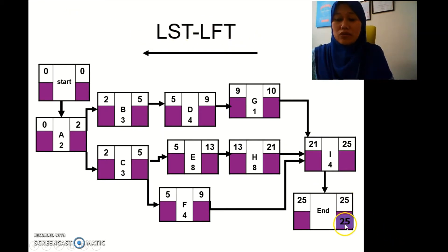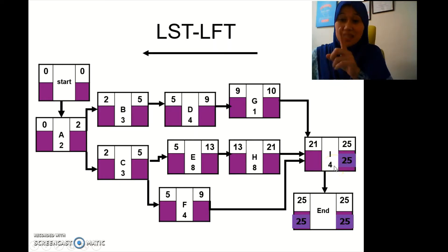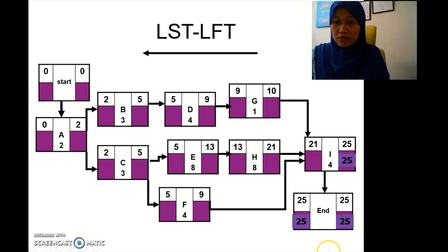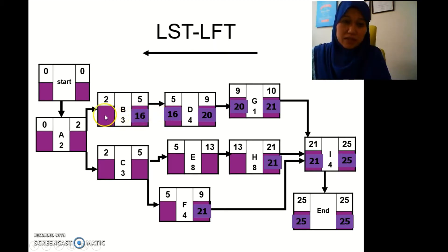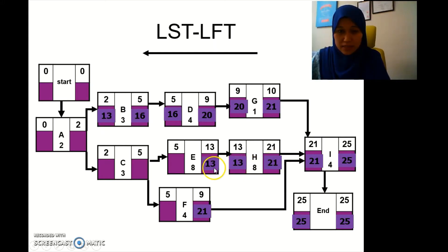We start from the end going backward. At the end box: 25. We bring 25 here — when going backward we subtract the duration — so 25 minus 4 gives 21. We bring 21 here, here, and here. Starting with the top row: 21 minus 1 is 20, bring 20 here. 20 minus 4 is 16, bring 16 here. 16 minus 3 is 13.